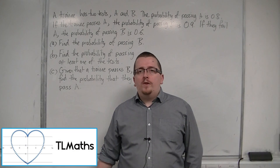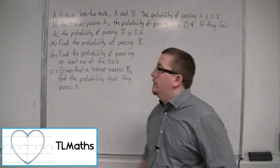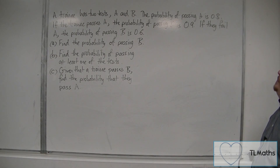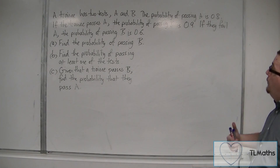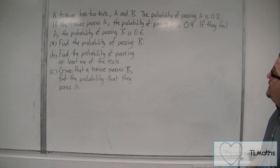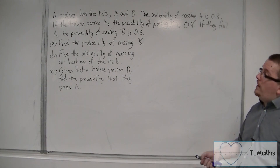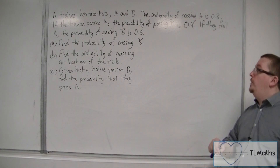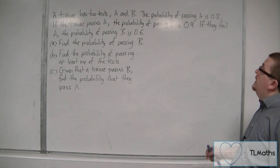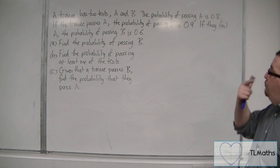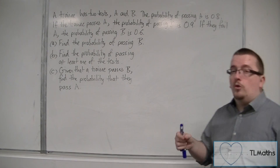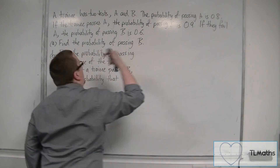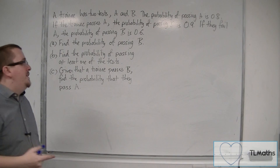Let's look at a probability tree problem. A trainee has two tests, A and B. The probability of passing A is 0.8. If the trainee passes A, the probability of passing B is 0.9. If they fail A, the probability of passing B is 0.6. At this stage, it's best to draw the tree diagram.